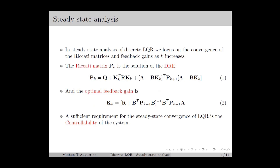From the previous lecture, the Riccati matrix pk can be computed recursively using the difference Riccati equation or DRE as given in equation number 1, in which we compute pk using the system parameters and pk+1. Also using pk+1 and the system parameters, we can compute the feedback gain as given in equation number 2. Now, if the Riccati matrix converges to some fixed matrix, then pk+1 equals pk, which equals some matrix ps. In that case, we can replace pk+1 in the feedback gain equation with ps and the feedback gain also converges to some constant matrix.